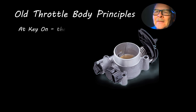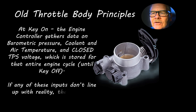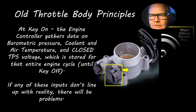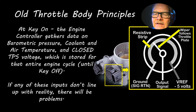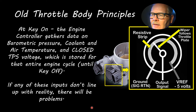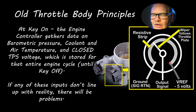At key-on, the engine controller gathers data on barometric pressure, coolant, air temperature, and closed throttle position sensor voltage — it considers that the closed throttle reference for the entire key cycle. If any of those inputs don't line up with reality, you're going to notice things going wrong. The throttle position sensor potentiometer moves with the throttle plate on a resistive strip — the closer you move toward ground the lower the voltage is, the farther toward the reference voltage the higher it goes, up to about 4.6 volts. It never goes completely to 5 volts.